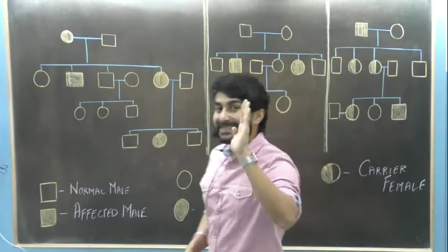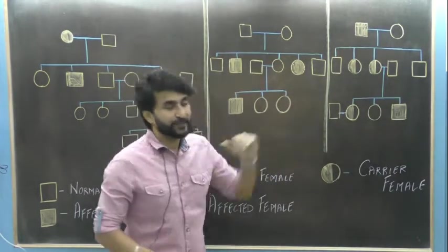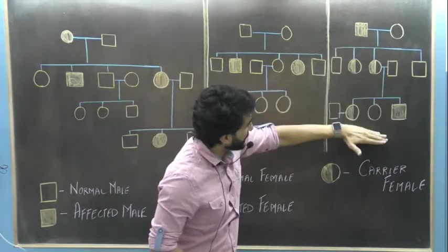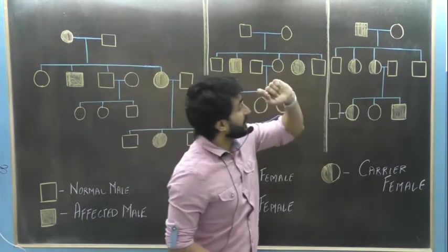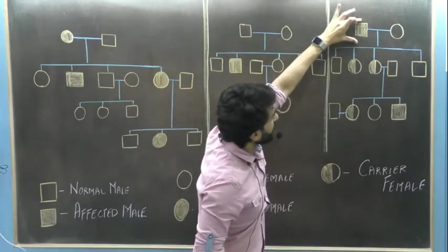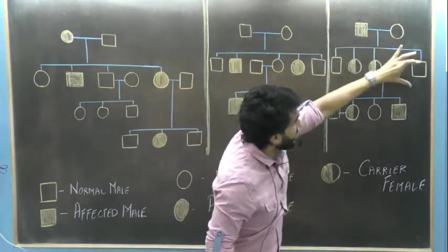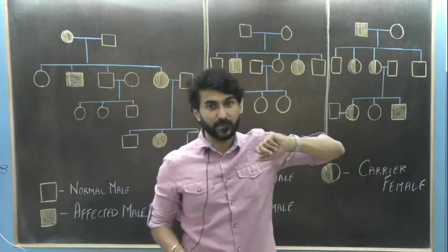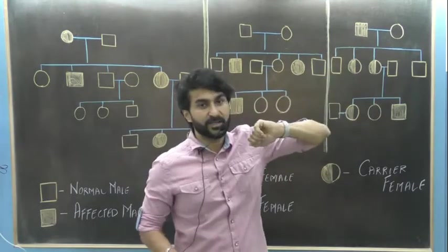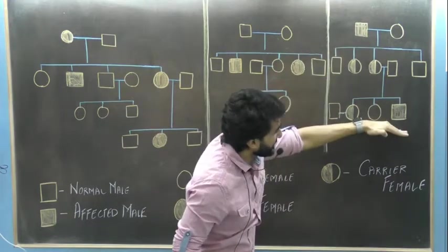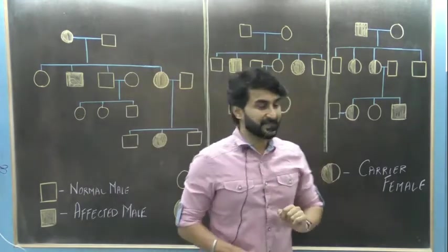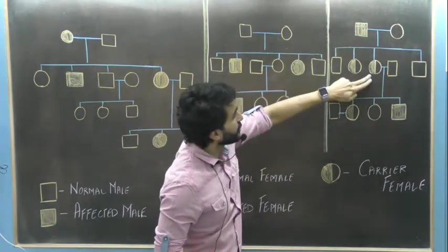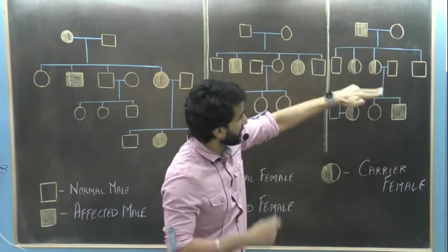If it is a sex chromosomal disorder, you would find a pattern of inheritance. This is the pedigree chart of color blindness. If you observe here, the inheritance is showing a pattern. The male is suffering from color blindness. In the next generation, no one is suffering from color blindness but the females are the carriers. In the next generation again, the male is suffering from color blindness — the inheritance skips a generation. So the grandfather and the grandson are suffering from color blindness. Sex chromosomal disorders go from grandfather to grandson through the carrier female.